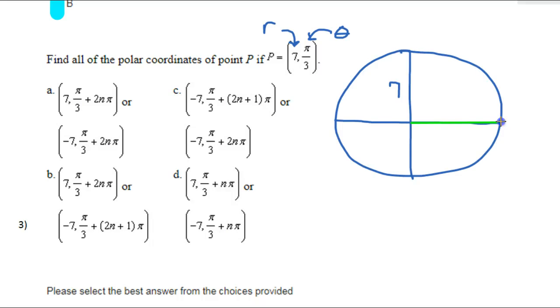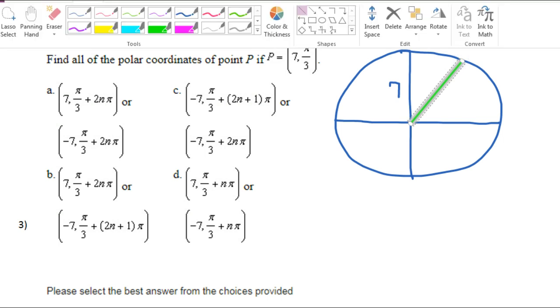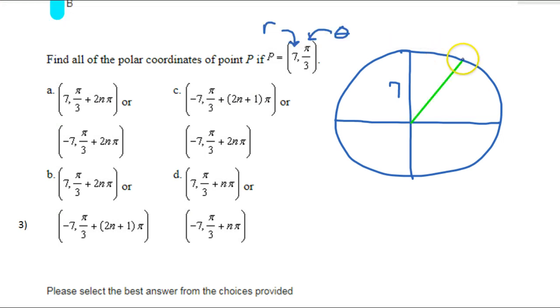Then we do the angle of rotation, which is pi over 3. So I went positive 7. Now I'm rotating a third of pi, which is about here. So this would be a diagram of point P. So I went positive 7 and then I rotated pi over 3 counterclockwise.